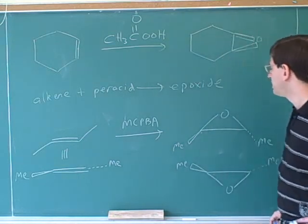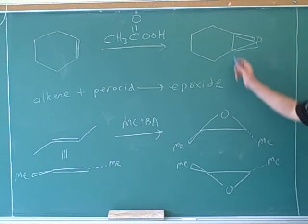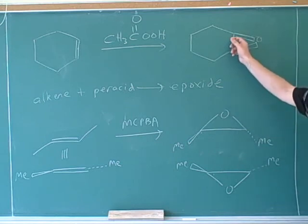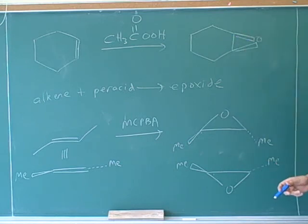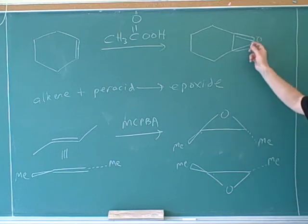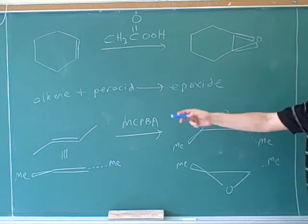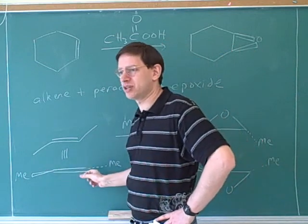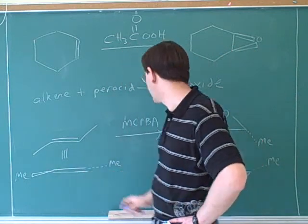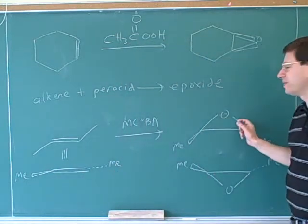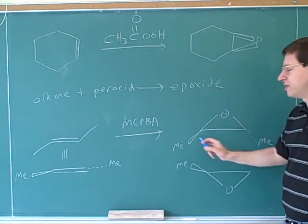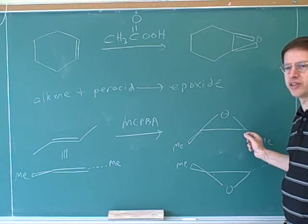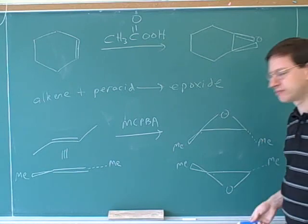The important comparison is this: if you're attacking a cyclic alkene, the epoxide oxygen ends up on wedges or dashes. But if you're attacking an acyclic alkene, you should redraw it with substituents on wedges and dashes, and then the oxygen ends up in the plane of the page while the substituents stay on the wedges and dashes.